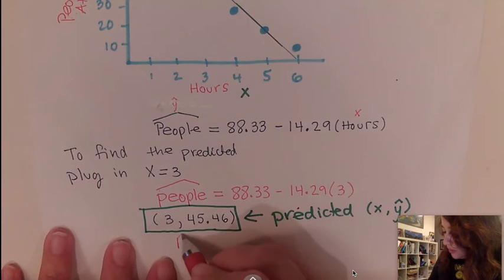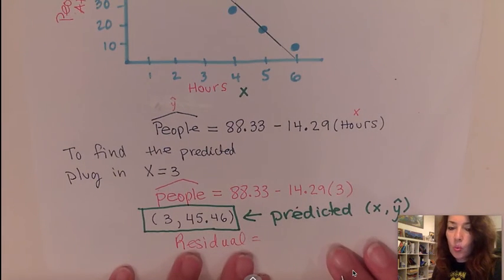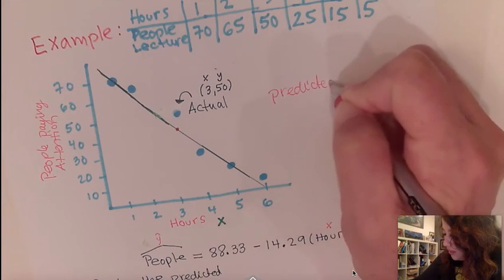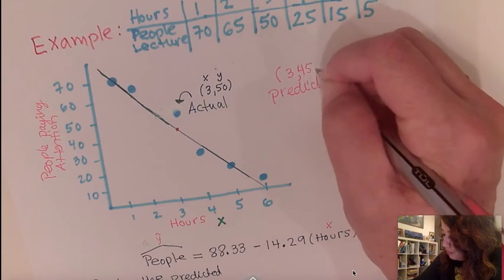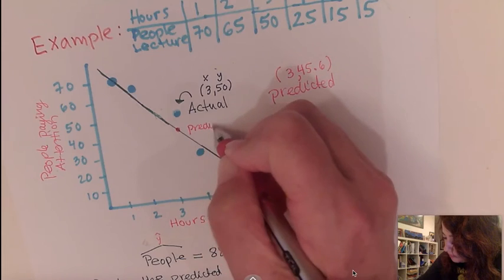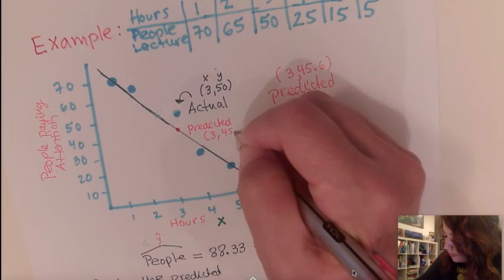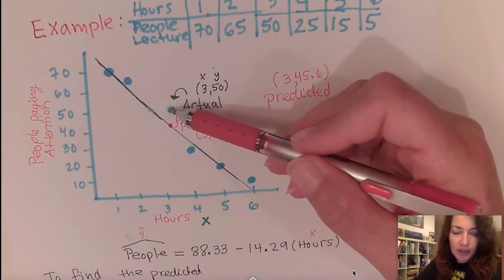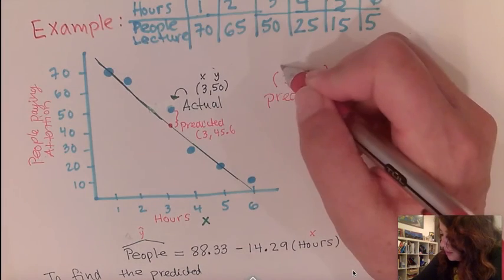Well, the residual will simply be the actual minus the predicted. But when I talk about actual, I mean the Y value. So let's go ahead and look at the predicted point. Using the equation, we predicted that at the hour of three, there will be 45.6 people. In other words, this point right here, the predicted point, is 3 comma 45.6. So what we actually want to know is the vertical distance. How far away is my actual from the predicted? So all you need to do is subtract it. So here is the predicted point.